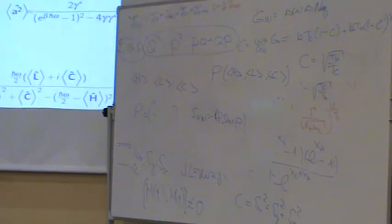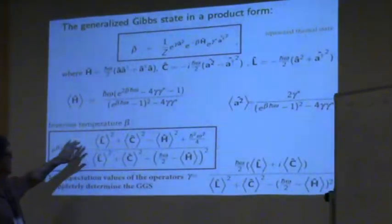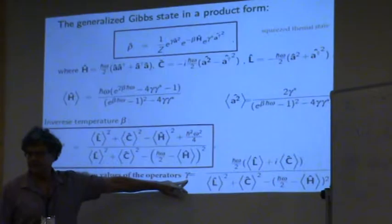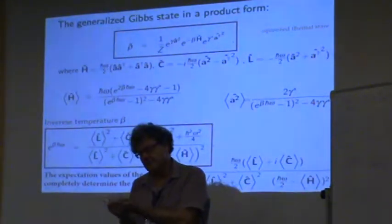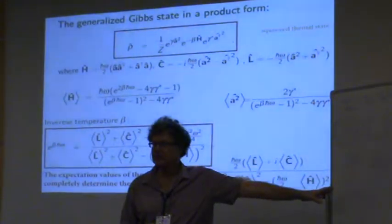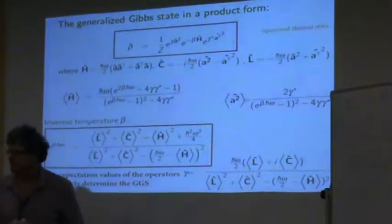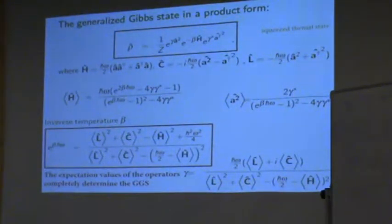It looks complex, but that's okay. Here I have three expectation values and I give you the canonical form, giving me beta and gamma. Now you could ask: is it true that any engine like that will always be in canonical form? Let's say I start from a different, non-canonical state — will it become canonical?